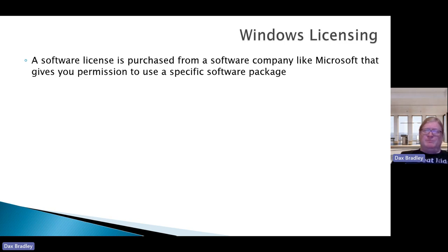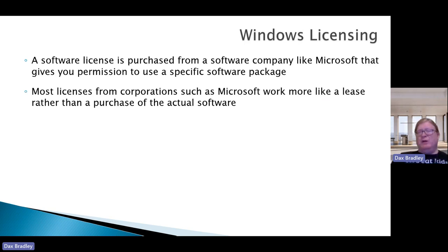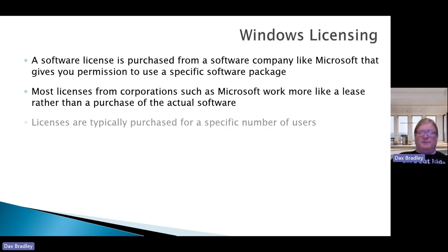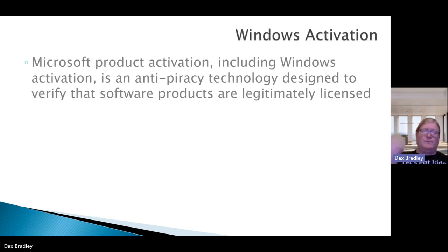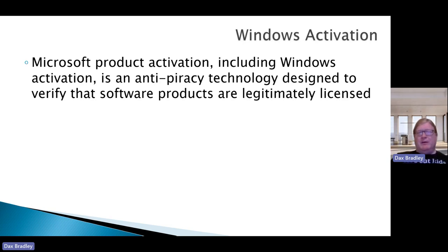Keep in mind Windows software licensing is important. Licensing is a software license purchased from a company like Microsoft that grants you permission to use a specific software package. It can be specific to the number of users and what machines it can be on. Most licenses from corporations like Microsoft work more like a lease rather than a purchase of actual software. Years ago, the licensing was configured into the cost of the computer — Windows OS had Word and all different programs built in. Today it's a different story. Licenses are typically purchased for a specific number of users, usually over a time period like a year, and activation can occur over the network automatically.